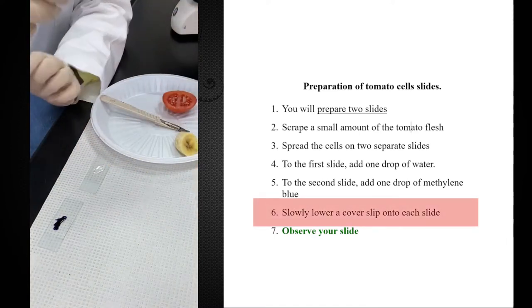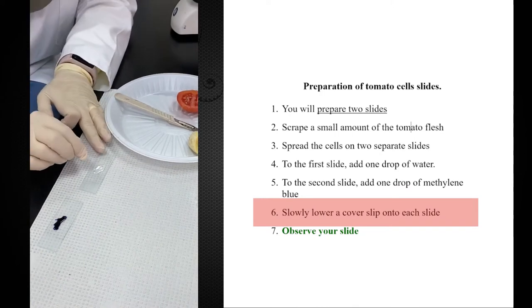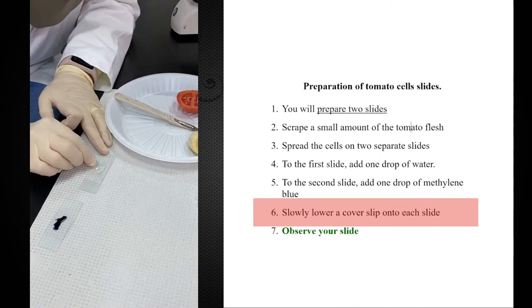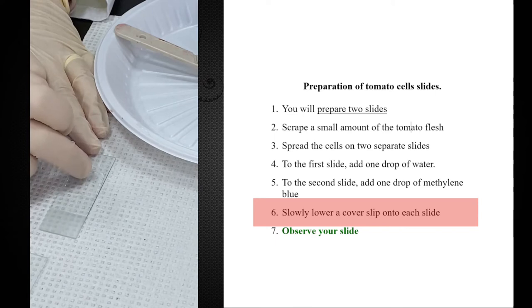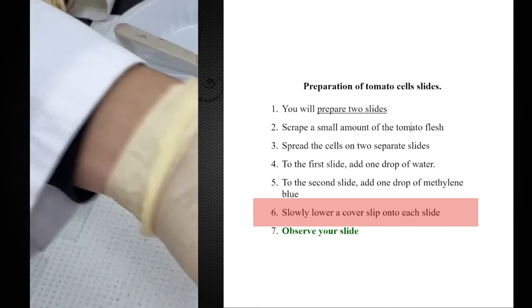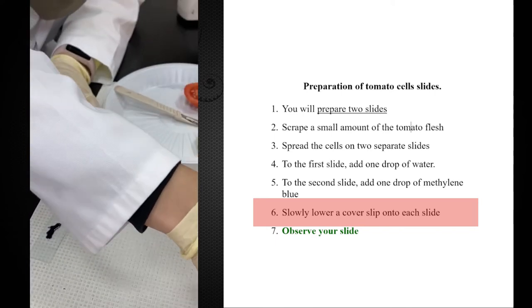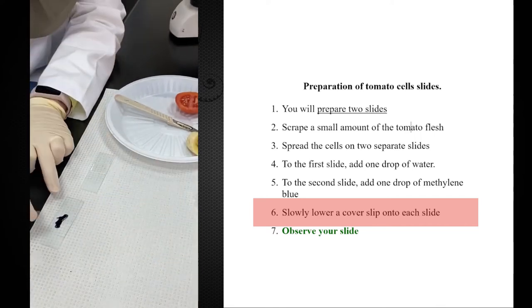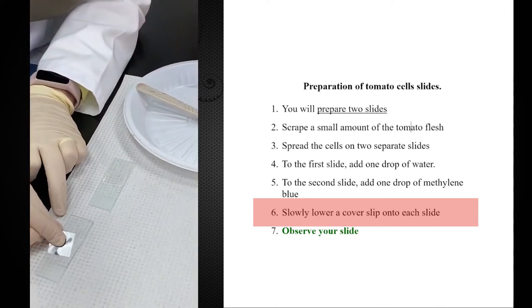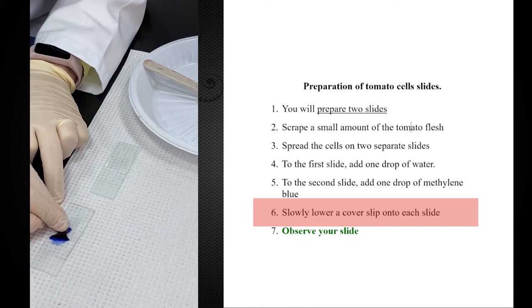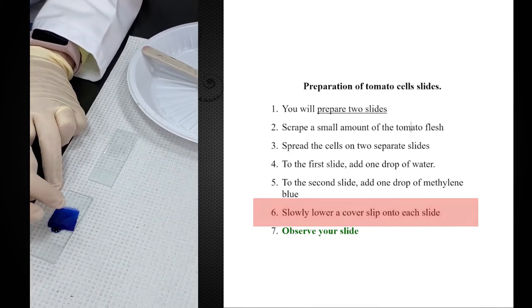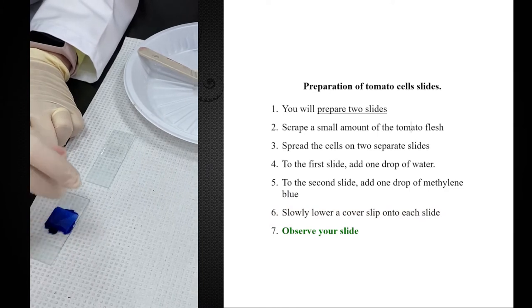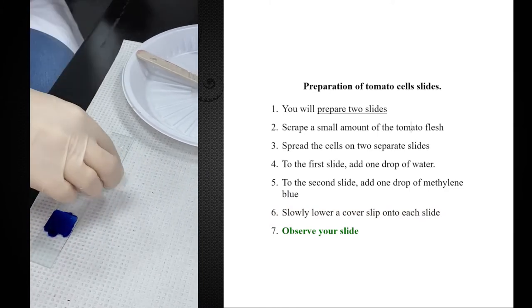Then I take a cover slip and I touch the liquid with the cover slip and I start lowering it slowly, slowly, to avoid air bubbles. Once it's in place, my slide is ready. I'll take another cover slip and I will put it on the methylene blue. Actually, one drop of the liquid would have been enough. I have excess liquid. Anyway, when you have excess liquid, you can wipe it with tissue from the sides.